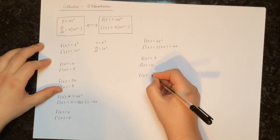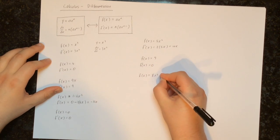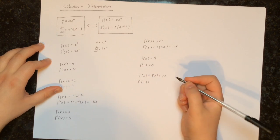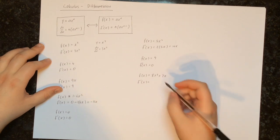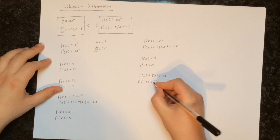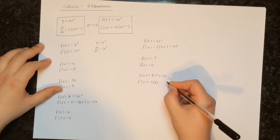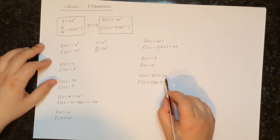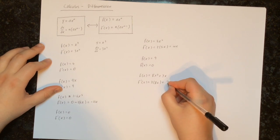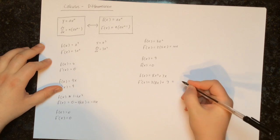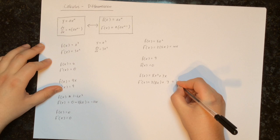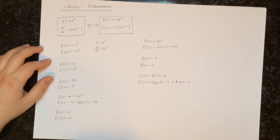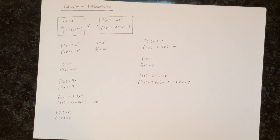Next, let's try f of x equals 8x squared plus 7x. This is a sum of two things, so we differentiate each independently and add the results. For 8x squared, we multiply by the power — that's 2 — and reduce the power by 1. For 7x, that's a number times x, so when we differentiate we're just left with 7. So the derivative equals 2 times 8, which is 16x, plus 7.